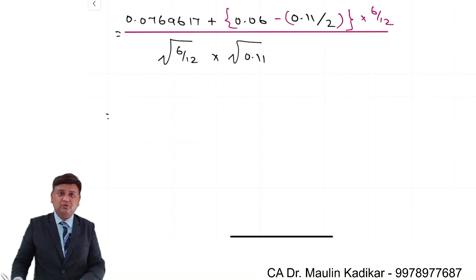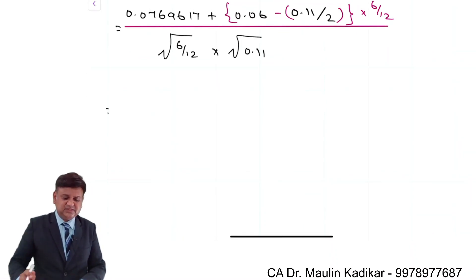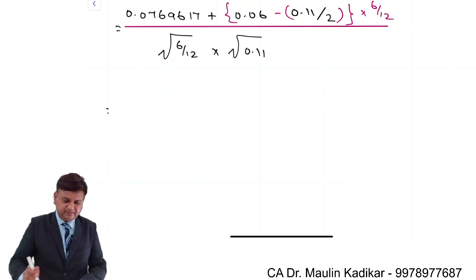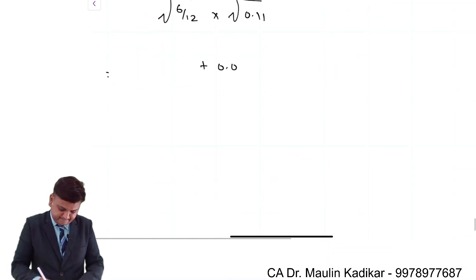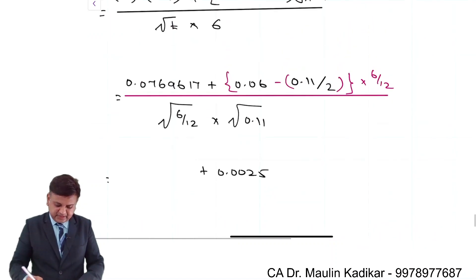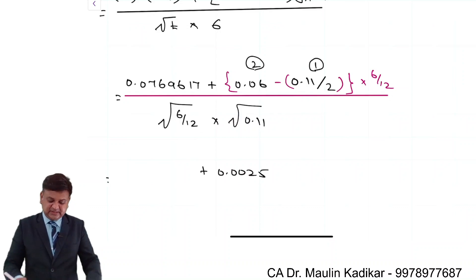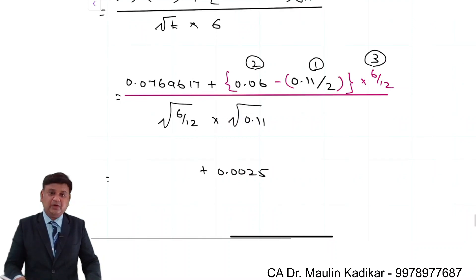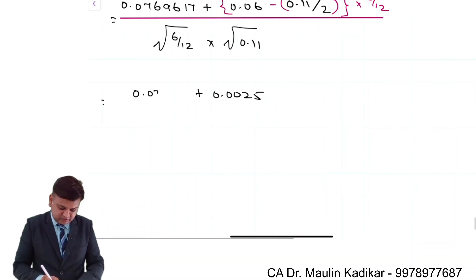So, 0.11 divided by 2 is 0.05, which is subtracted from 0.06. So 0.005 into 0.5, giving 0.0025. This value will be found first, then deducted from 0.06. Whatever answer we have will be multiplied by 0.50, then added to 0.0769617.